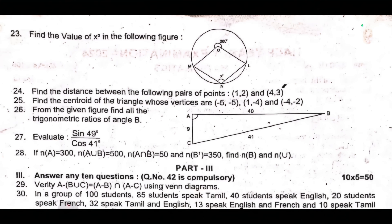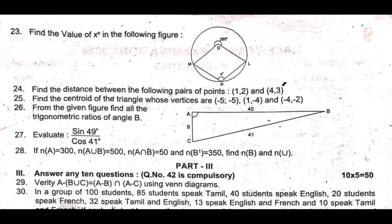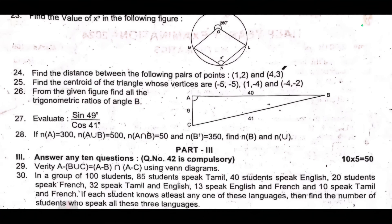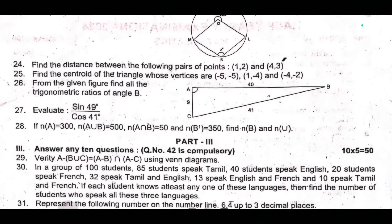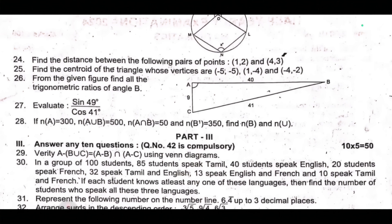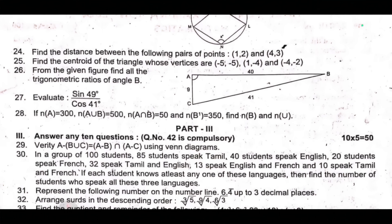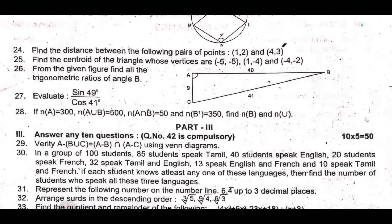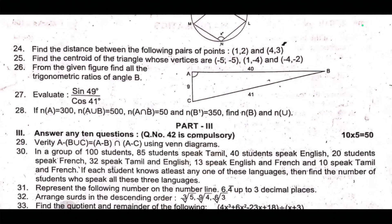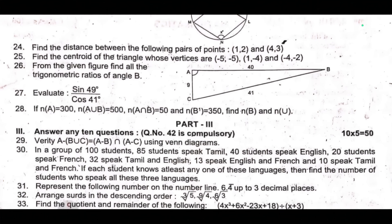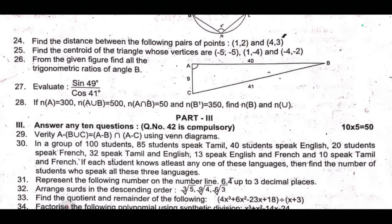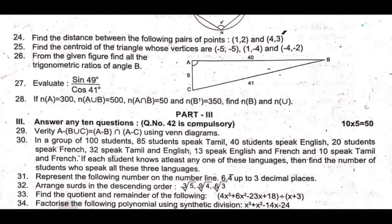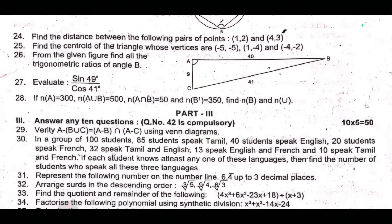Twenty-eighth, if n(A) = 300, n(A union B) = 500, n(A intersection B) = 50, n(B') = 350, find n(B) and n(U). Twenty-ninth, verify A minus (B union C) equal to (A minus B) intersection (A minus C) using Venn diagram. Thirtieth, in a group of 100 students, 85 students speak Tamil, 40 students speak English, 20 students speak French, 32 speak Tamil and English, 13 speak English and French, 10 speak Tamil and French.